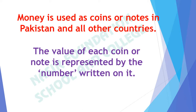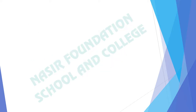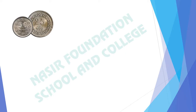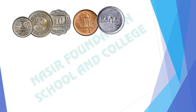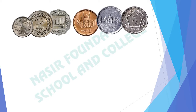The value of each coin or note is represented by the number written on it. Here 50 is written — it shows 50 Paisa. This shows 25 Paisa, and this coin shows 10 Paisa. This is a 1 rupee coin, this is a 2 rupee coin, and this is a 5 rupee coin as 5 is written on it.